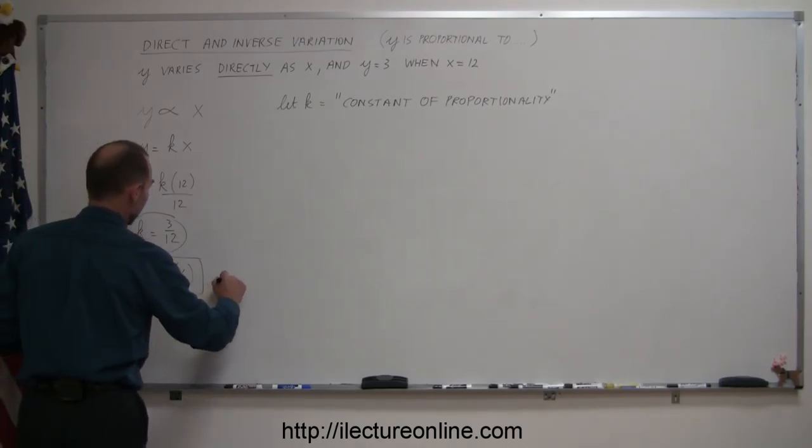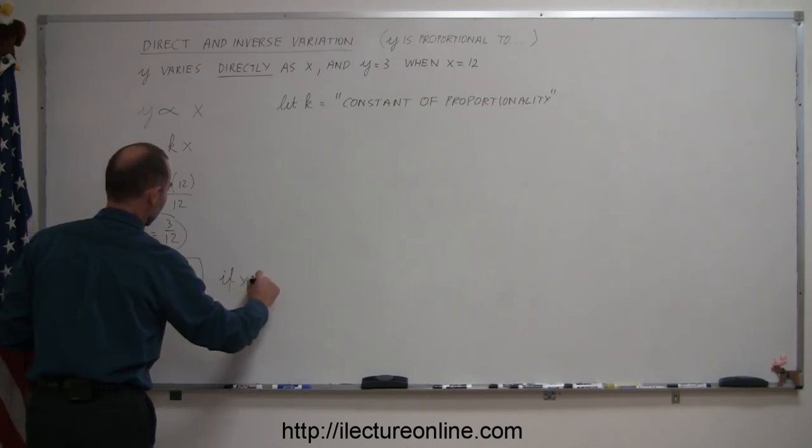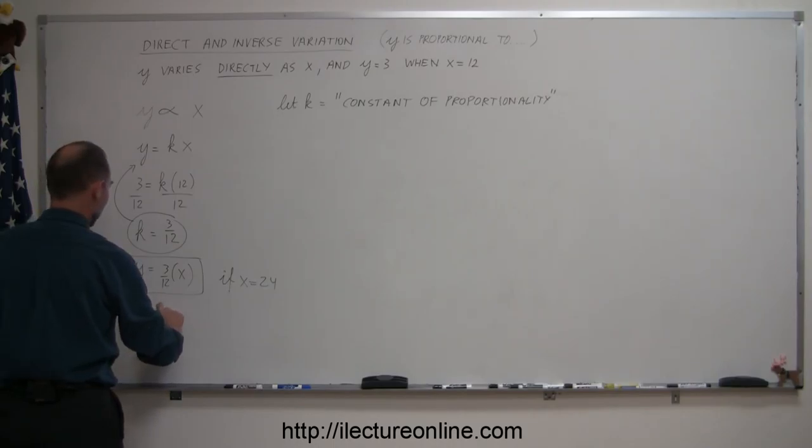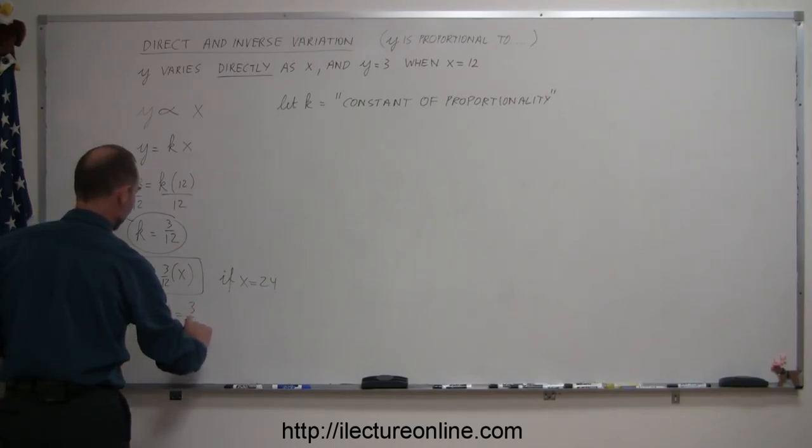Now that we have a constant of proportionality, we can now plug that back into our equation, and now we can write that y is equal to 3 over 12 times x. And there's our equation.